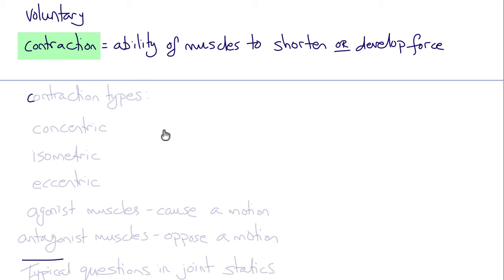So there are several types of contraction. Concentric contractions are muscle contractions that result in muscle shortening. Isometric contractions are muscle contractions where the muscle develops force at constant length.